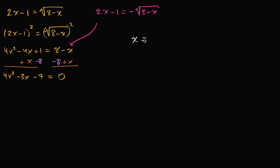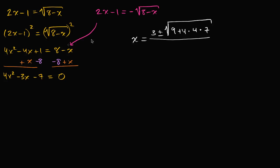I'll use the quadratic formula. x is equal to negative b, so three, plus or minus the square root of b squared — negative three squared is nine — minus four times a, which is four, times c, which is negative seven. Since c is negative, that makes the term positive. All of that over two a, and two times four is eight.